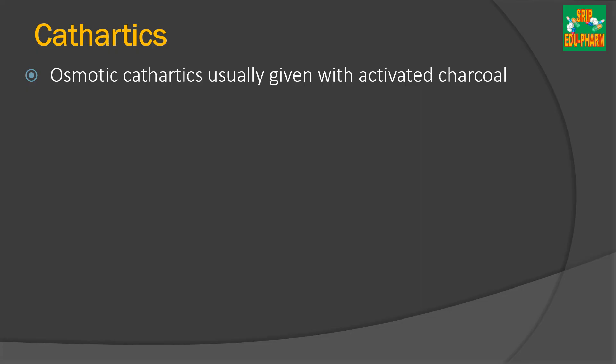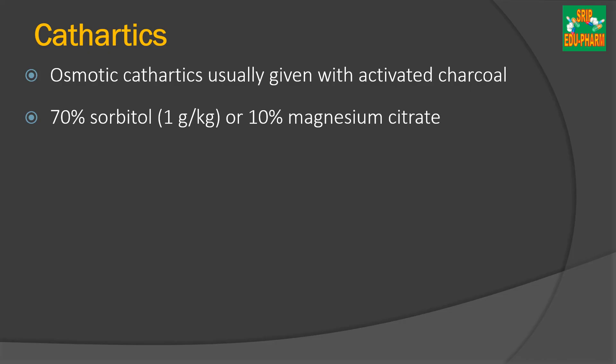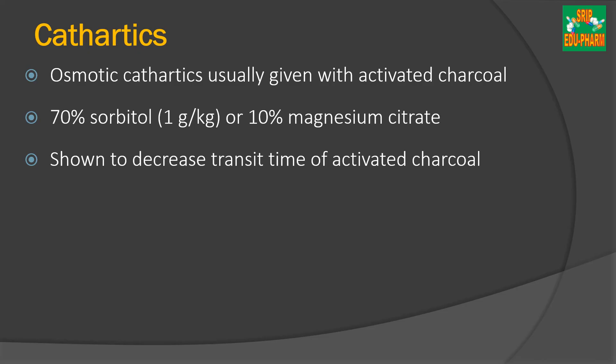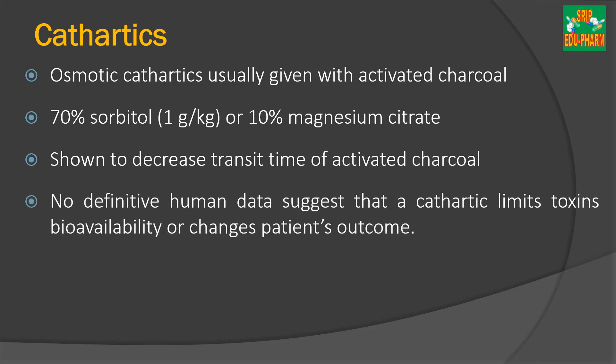The next method is the use of cathartics. Osmotic cathartics are generally given with activated charcoal. Examples include 70% sorbitol and 10% magnesium citrate. These cathartics reduce the transit time of activated charcoal through the gut. They do not themselves limit toxin bioavailability or change patient outcome, but by reducing transit time, they allow more poison to be adsorbed by the charcoal.